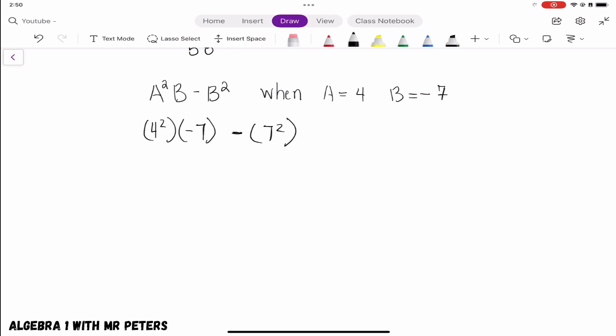So let's go back now and do this. So we have 16 times negative 7, and then we're going to subtract 49. Now I know a lot of you guys are thinking, hold on Mr. Peters.